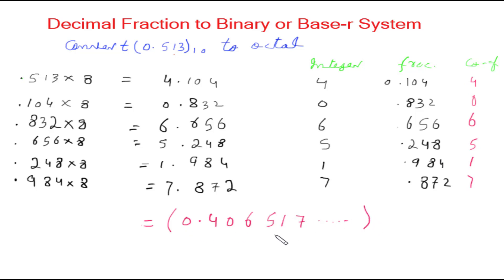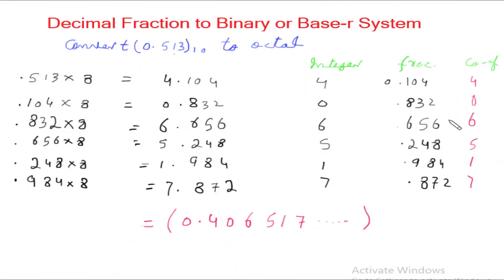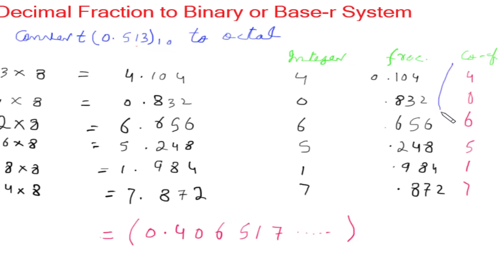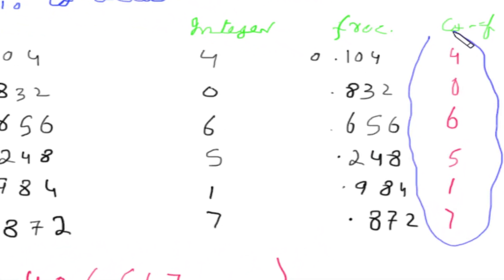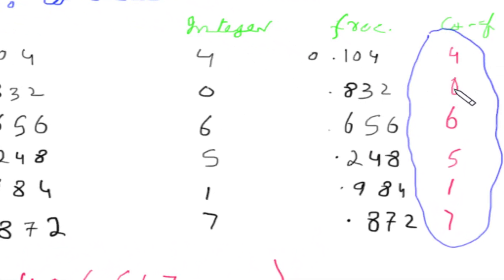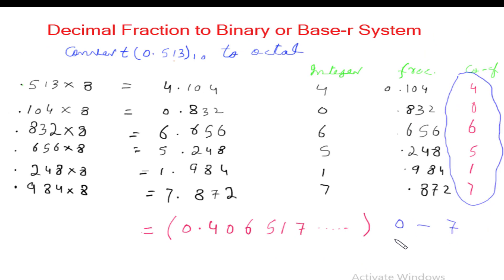These are seven significant figures. As I told you, this process is continued until the fraction becomes zero or the number of digits has sufficient accuracy. Now I want to point out something about these coefficients: the coefficients we obtain from the integer column have values 0, 1, 2, 3, 4, 5, 6, 7 — ranging from 0 to 7 for octal. For binary numbers we only have 0 and 1.